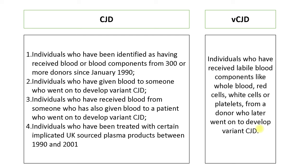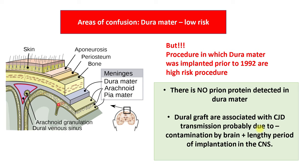For CJD, the following conditions are considered a risk: individuals who have received blood or blood components from 300 or more donors since January 1990; individuals who have given blood to someone who went on to develop variant CJD; individuals who have received blood from someone who also gave blood to a patient who developed variant CJD; and individuals treated with certain implicated UK-sourced plasma products between 1990 and 2001. For variant CJD, individuals who received labile blood components — whole blood, red cells, white cells, or platelets — from a donor who later went on to develop variant CJD. Remember that the risk of blood-borne viruses should still be considered in situations like inoculation or sharps injury.